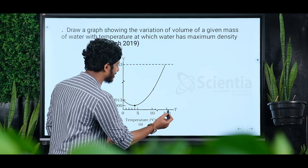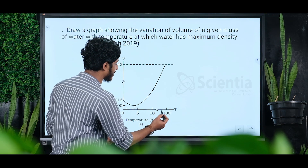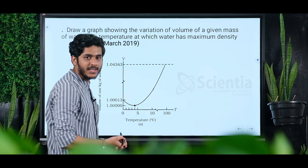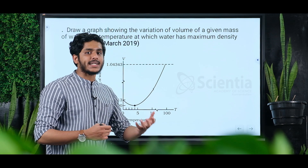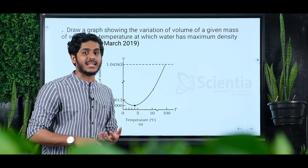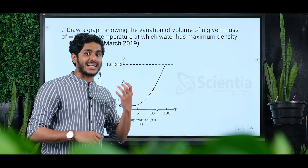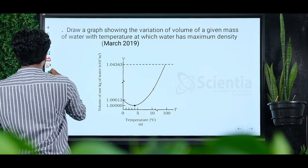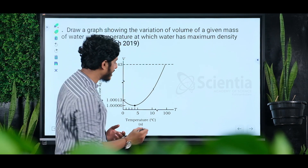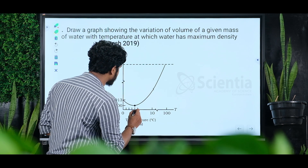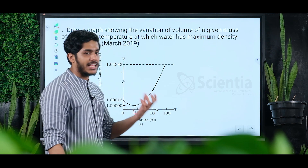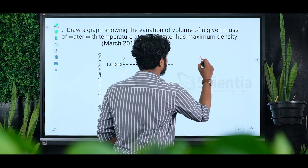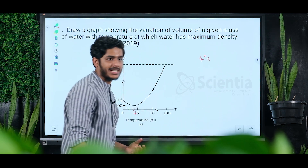Volume decreases as temperature decreases. But at a particular temperature, water has maximum density. That temperature is 4 degrees Celsius. At 4 degrees Celsius, water has maximum density.